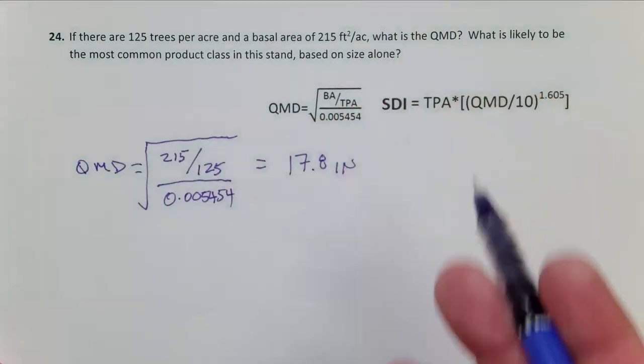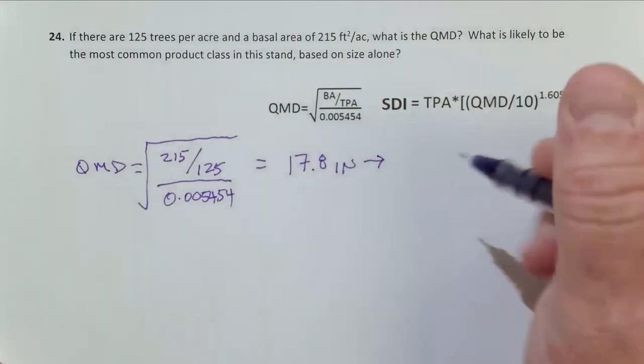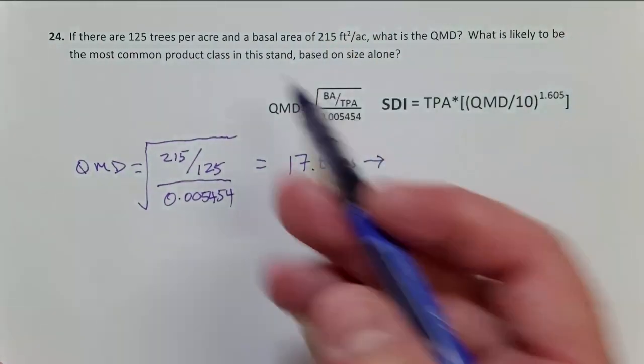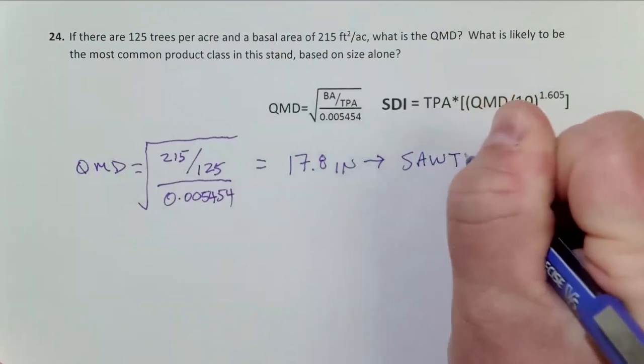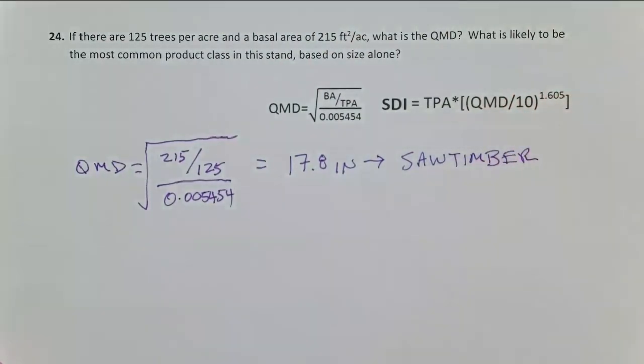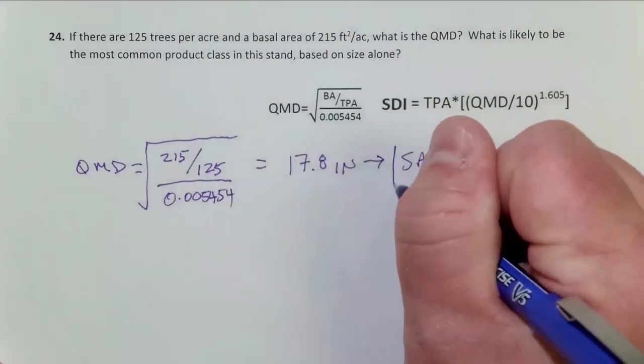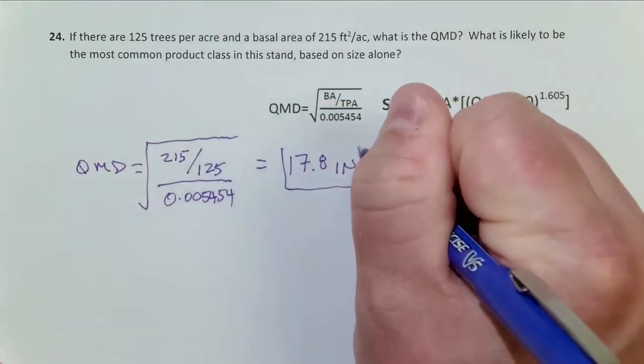And that should give me 17.8 inch diameter trees. So what's the product class? I mean, they could be poorly formed to be pulpwood, but if these are good form trees, say we're looking at southern yellow pines, it doesn't give us a species in this problem. That could certainly be saw timber sized. Even for hardwoods. If these are oaks, sycamores, sweetgums, those are plenty big enough trees that those could be saw timber sized. So that more directly answers our question here. Saw timber sized, 17.8 inches.